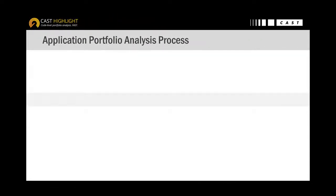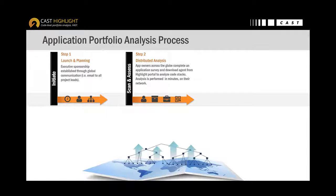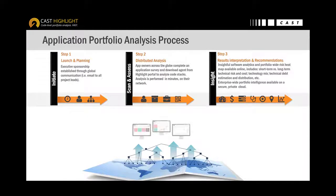So far we've mentioned objectivity and velocity. To be complete, we have to make sure that the measurement stays repeatable as well as cost and time efficient. CAST Highlight uses assessment campaigns that invite application owners to answer a short survey and to execute a local agent to scan the code. This analysis happens locally, and only the results of the scan are uploaded to the portal. In other words, the code never leaves the company.